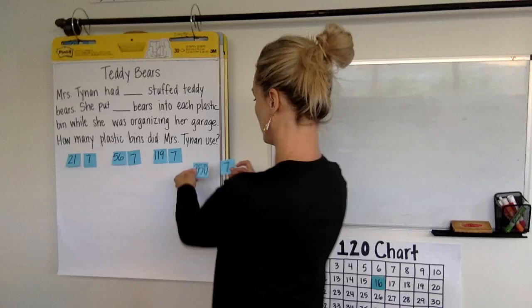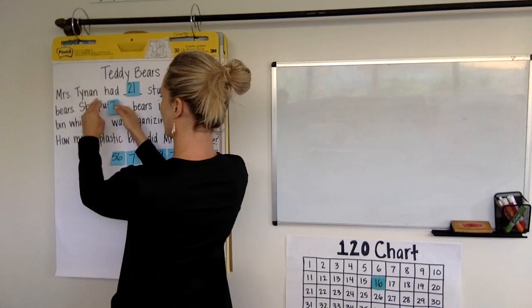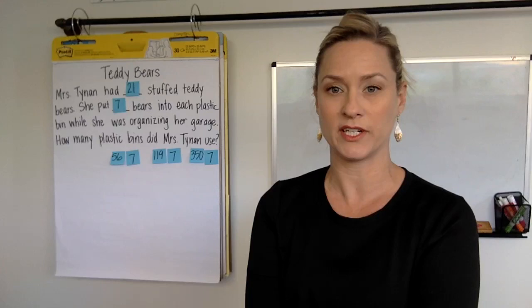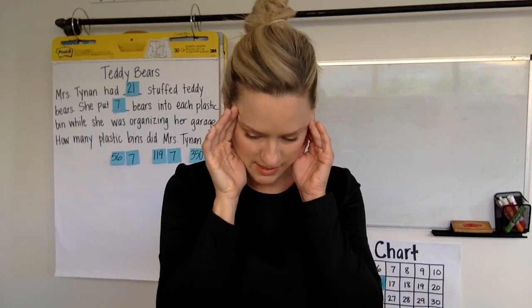Alright, so let's see, let's reread it. Let's put in our first number set. I'm going to choose 21 and 7. Alright, let's check it out again. Let's read it now that we know our numbers in the story. Mrs. Tynan had 21 stuffed teddy bears. Okay, can you imagine she's got 21 stuffed teddy bears?